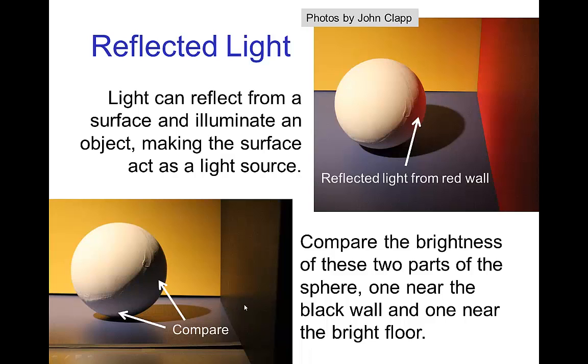The second photo is another example. In this case, you can compare the back of the sphere that is closest to the dark black wall, compared to another part of the sphere which is closer to the bright blue floor.